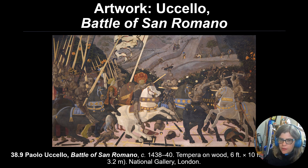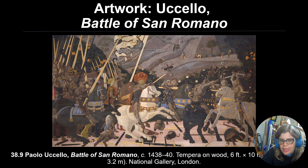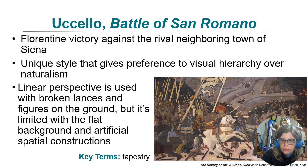This is a battle scene commemorating the victory of Florence over their rival Siena, by Paolo Uccello. Uccello doesn't quite follow single-point perspective — it's close, with lines on the ground and broken weapons leading us back into space — but the back of the composition looks flat rather than receding. It's a very chaotic composition with a unique style that gives preference to visual hierarchy over naturalism, where things that are important are larger and more central rather than making it look realistic.